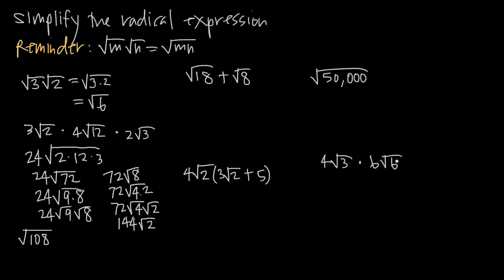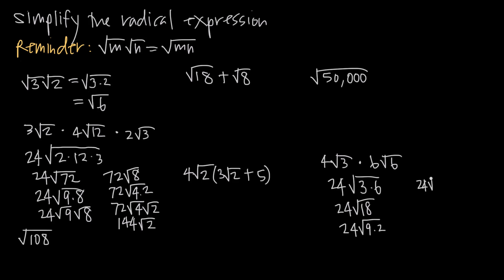Next example: 4 square root of 3 times 6 square root of 6. We multiply the whole number coefficients: 4 times 6 gives us 24. Then we separately multiply the square roots: square root of 3 times square root of 6 equals the square root of 18. So we have 24 times the square root of 18. Since 18 is 9 times 2, we write 24 times square root of 9 times square root of 2. The square root of 9 is 3, so 24 times 3 gives us 72, and our final answer is 72 root 2.